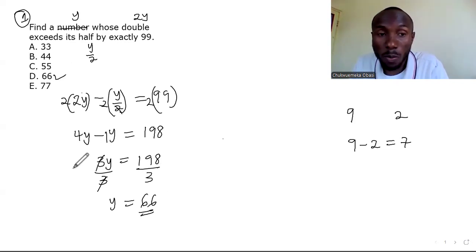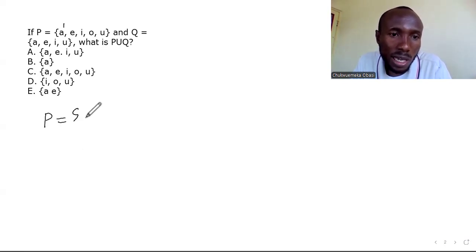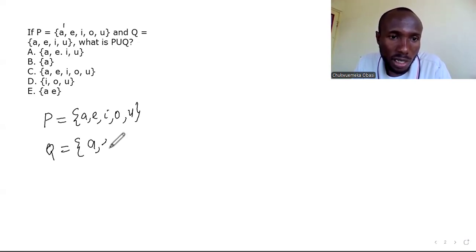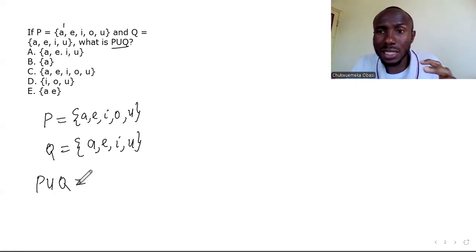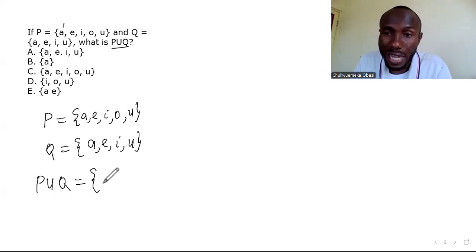Question two is a set problem — a very interesting kind of math problem. Set P has elements {a, e, i, o, u} and set Q has elements {a, e, i, u}. They ask us to find P union Q. Union means to combine all the elements of both sets together.